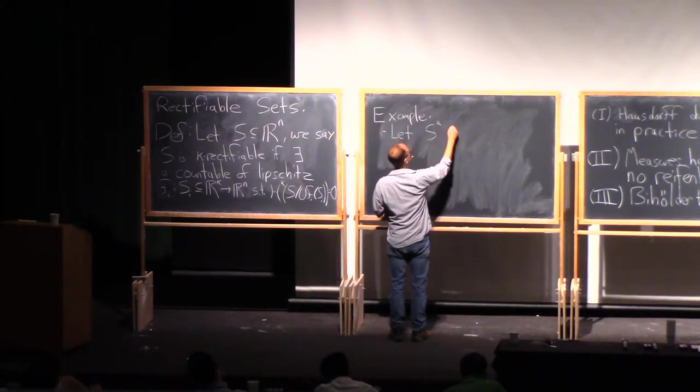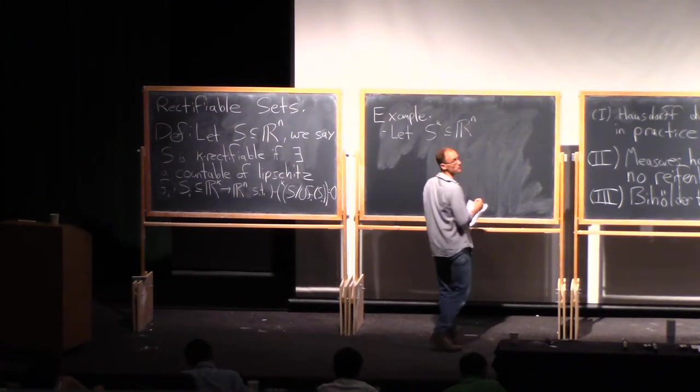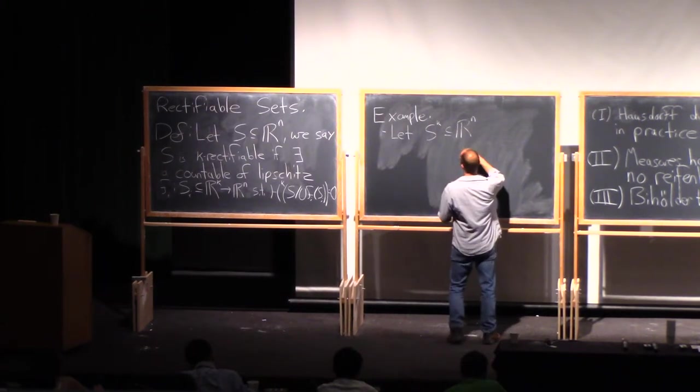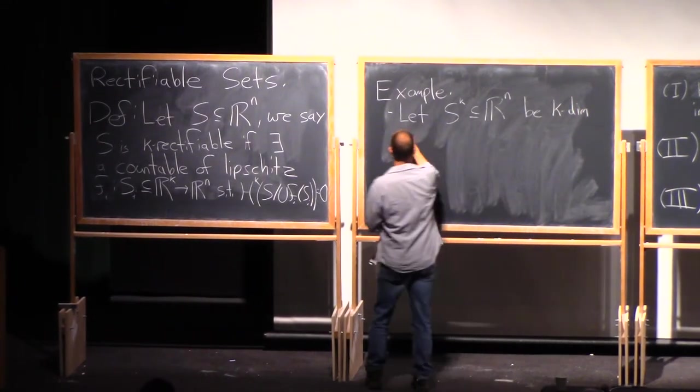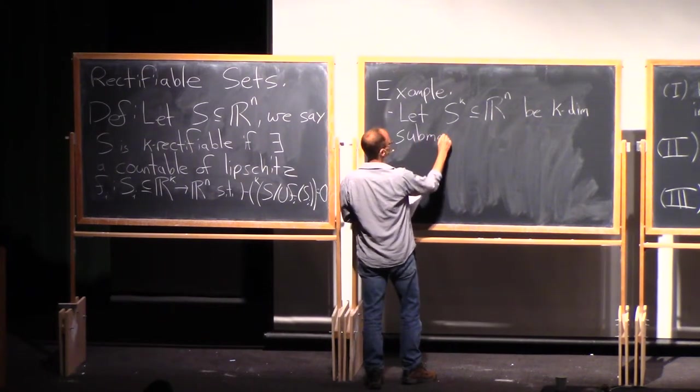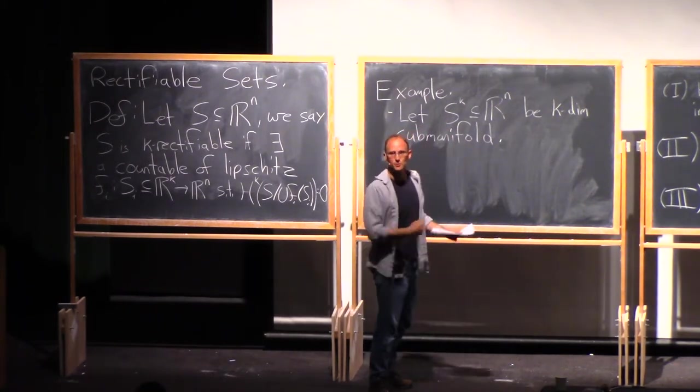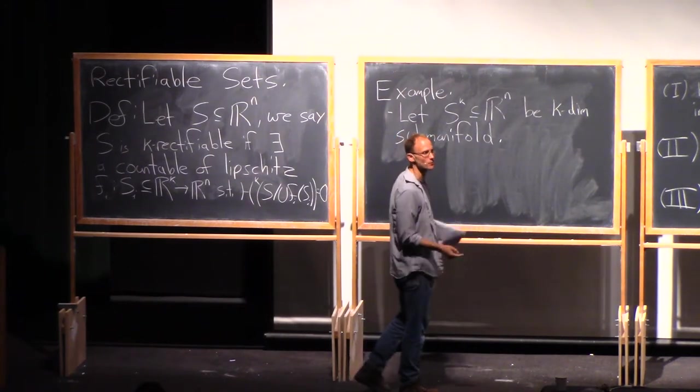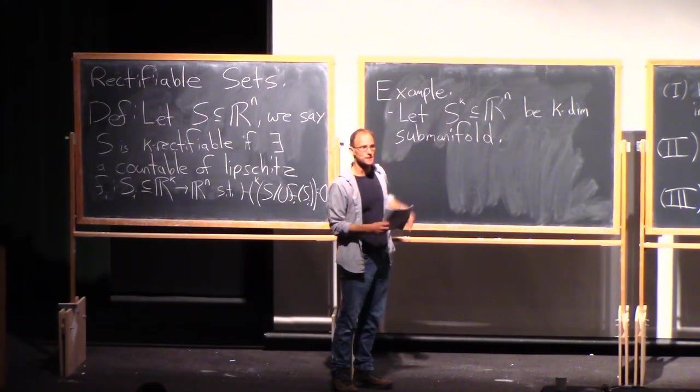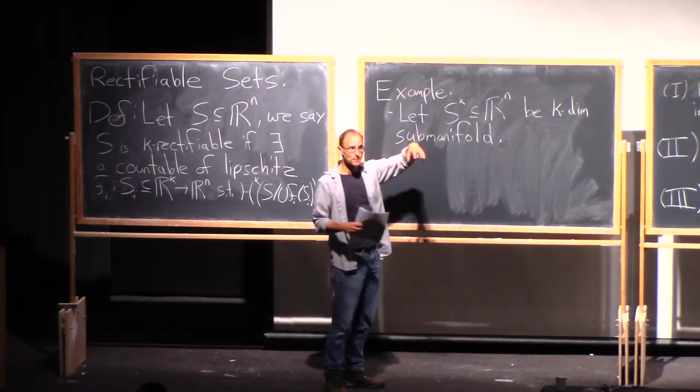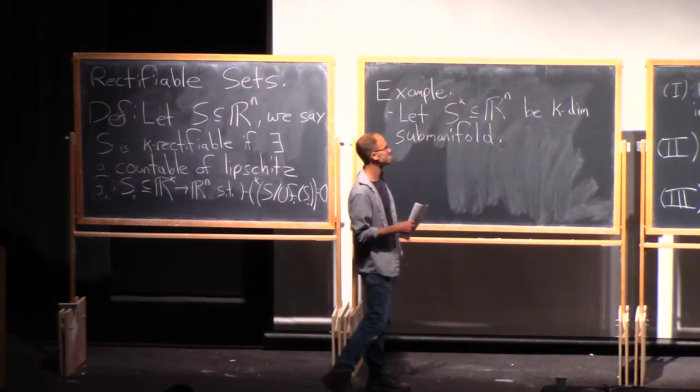So, examples. Let S_k in R^n, and I don't know if you can intersect this with the ball of radius one if you want it to be a compact set. That's fine. Be a k-dimensional submanifold. I'm going to assume smooth, but the point of the definition is you really only have to assume kind of Lipschitz. But let's just say smooth. Why not? Clearly, this is k-rectifiable. This is the point. So, essentially at every point there's a neighborhood of this thing which is going to be diffeomorphic to a ball in R^k. Union all those maps up. So, this is going to be k-rectifiable.